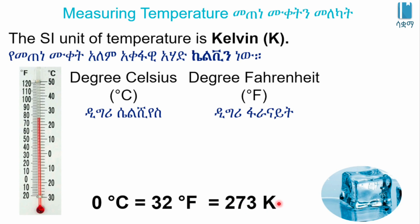0 K corresponds to zero degrees centigrade on the scale. Zero degrees centigrade is represented on the curve.